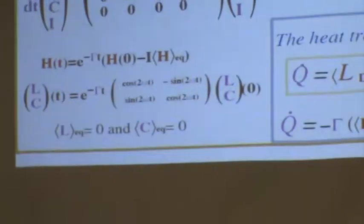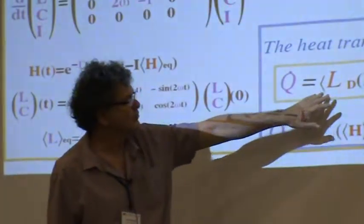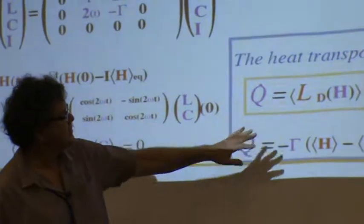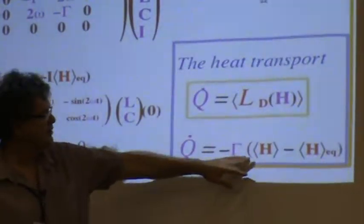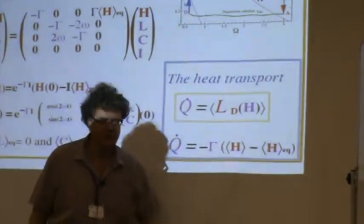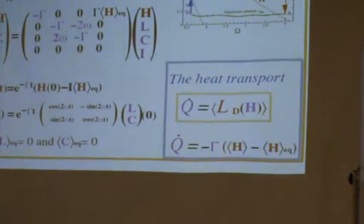Now we can calculate the heat. We said Q is the expectation value of LD of H. So we see the heat that's absorbed by our engine is this difference: H minus H equilibrium, times the rate.